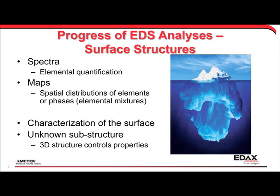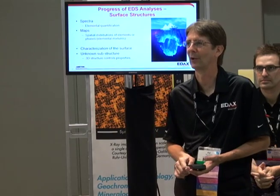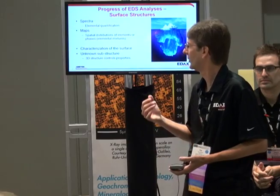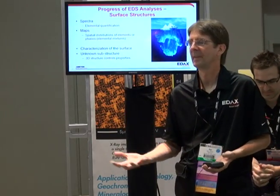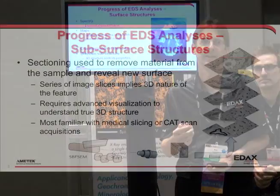The progress of EDS analysis historically has been just on the top surface of your sample, with the implication that if you understand what's on the top surface, you obviously understand the material all the way through into the third dimension. But as this figure illustrates, you may not quite know what's happening all the way down underneath the top surface. That's where you really want to know the three-dimensional structure, because it affects the real properties of the material.